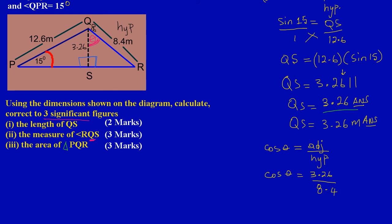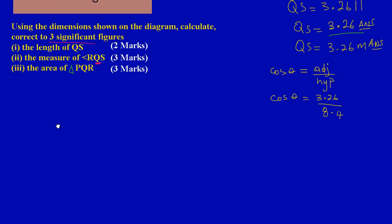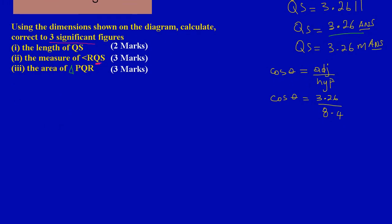We could just go ahead and solve this by saying when we divide 3.26 divided by 8.4, we would have gotten cos theta. You could try it on your calculator: cos theta is equal to, and I'm writing my answer up to four decimal places, 0.3881.